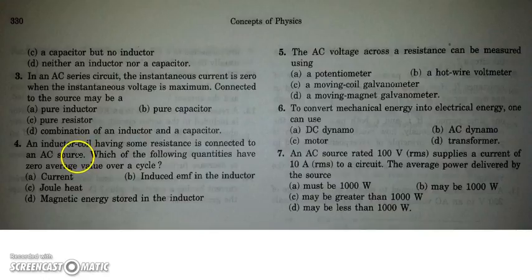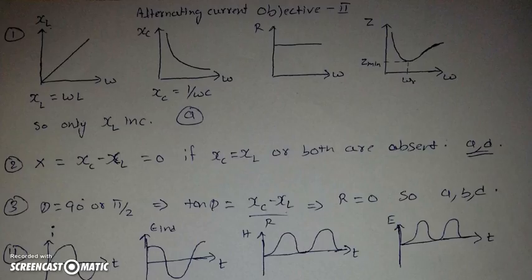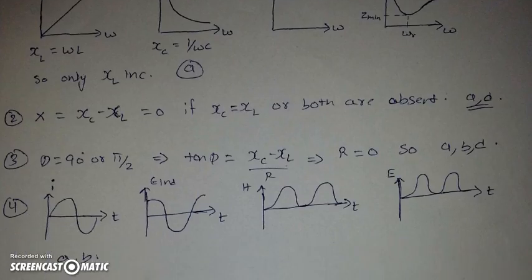As we have applied an AC source, the current will also be AC. The induced EMF in the inductor will also be an alternating type of EMF, but the Joule heating, as it is proportional to, you can look at the diagrams also.